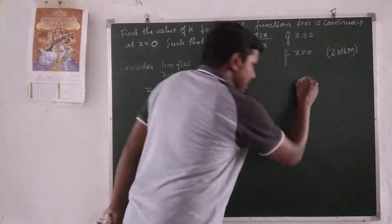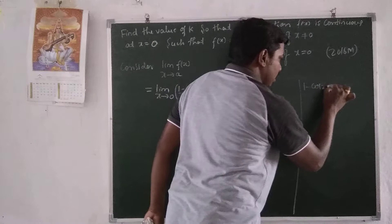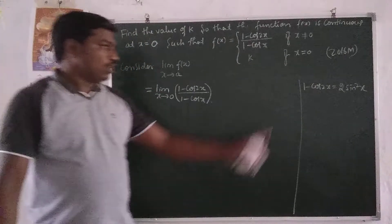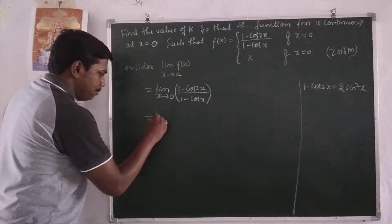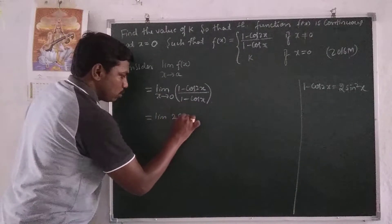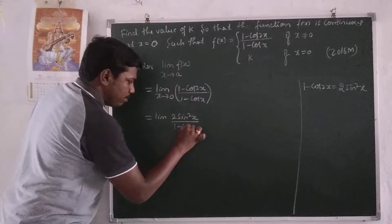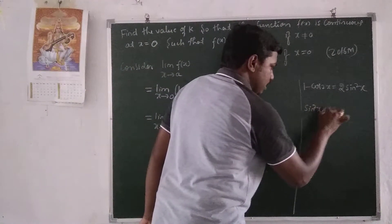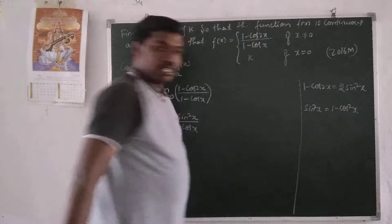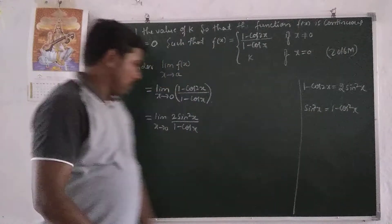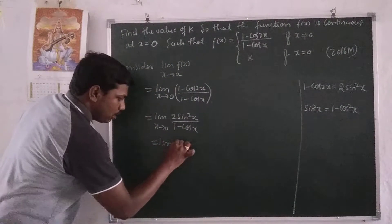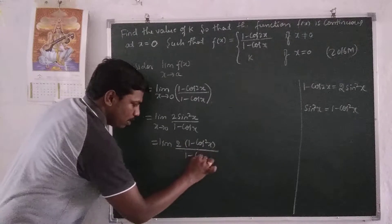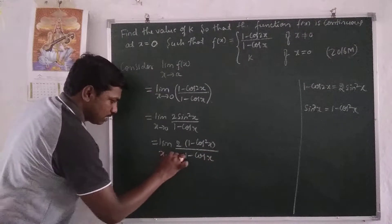We simplify f of x using trigonometric identities. The formula for 1 minus cos 2x is 2 sin squared x. So 1 minus cos 2x equals 2 sin squared x. Then for sin squared x, we use the identity: sin squared x is 1 minus cos squared x. So the limit becomes 2 into (1 minus cos squared x) divided by (1 minus cos x) as x tends to 0.